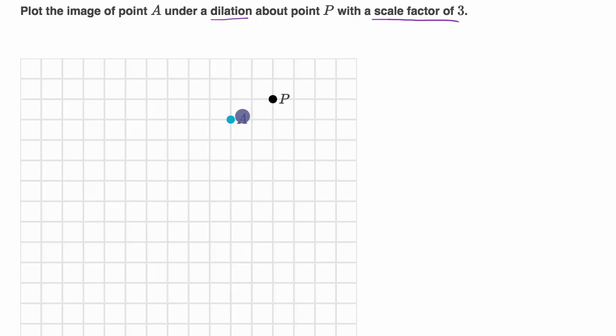Now, so what we're going to do is think about how far is point A. And then we want to dilate it with a scale factor of three. So however far A is from point P, it's going to be three times further under the dilation, three times further in the same direction. So how do we think about that?